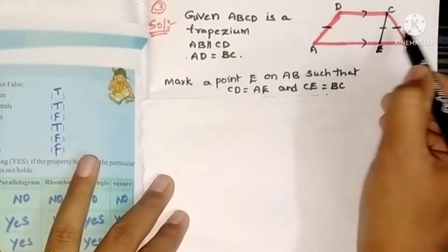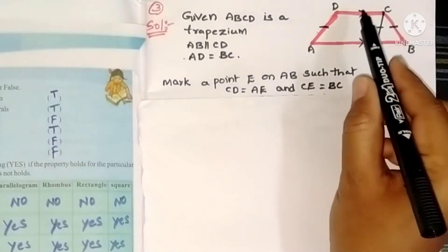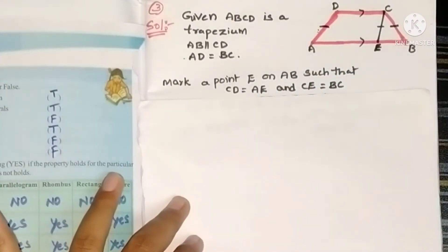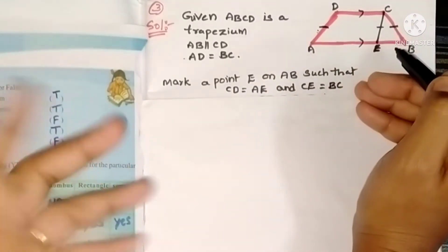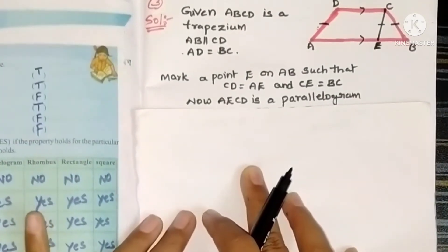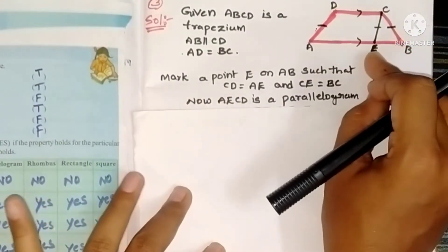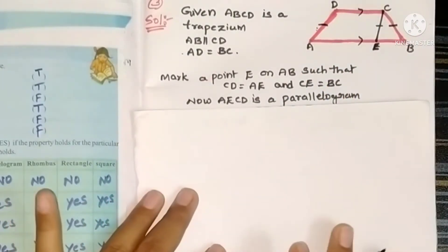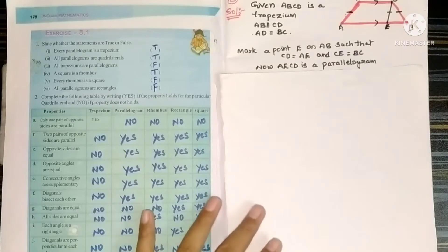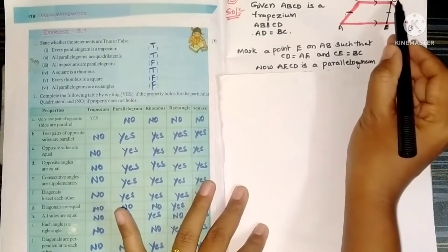These two sides are equal and these two are also equal. One pair of opposite sides are parallel, and opposite sides are also equal — so two pairs of opposite sides are equal. Therefore, AECD is a parallelogram. In a parallelogram, opposite sides are parallel, so we can write AD parallel to CE.